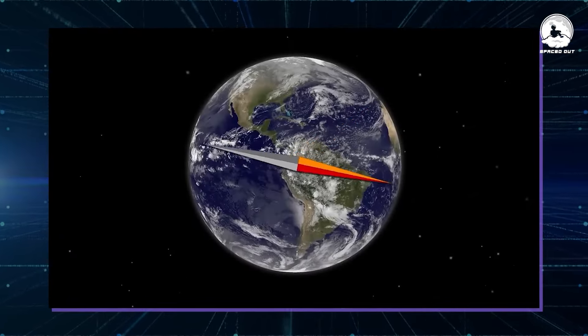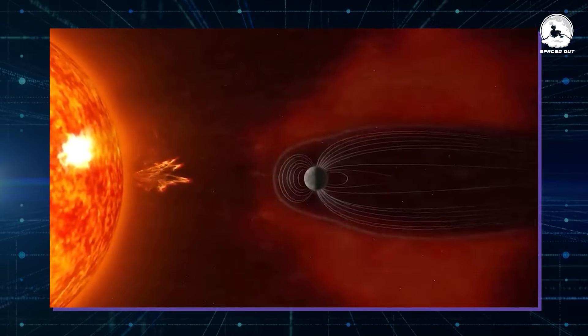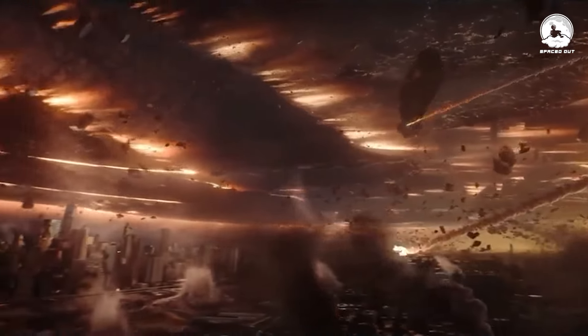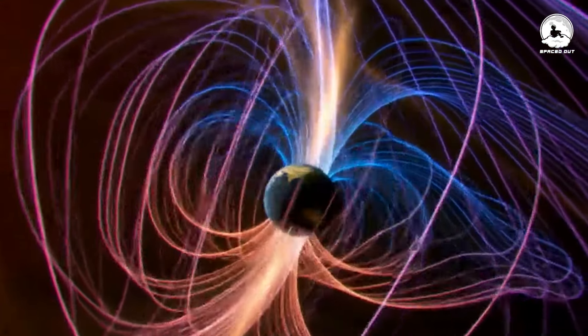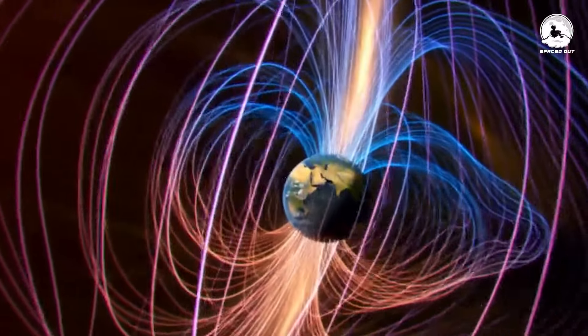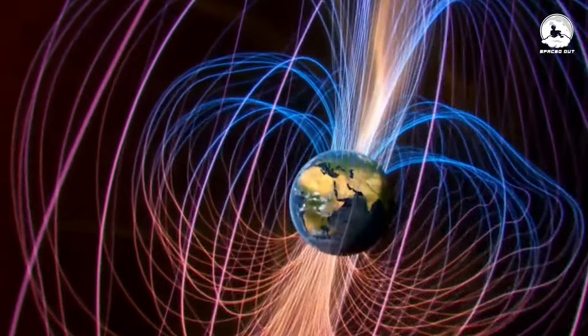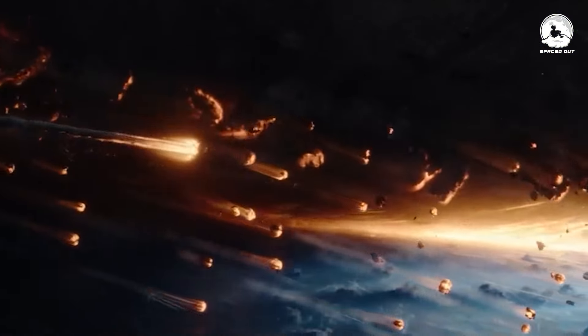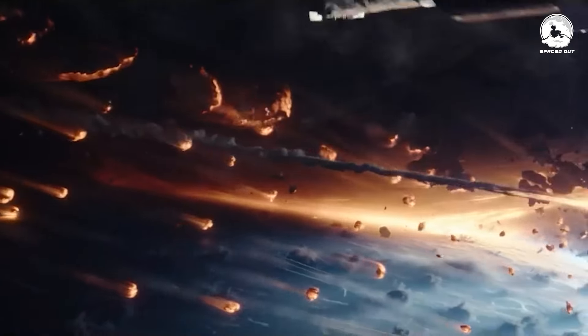Contrary to dramatic portrayals, a geomagnetic reversal is not an apocalyptic event. Throughout Earth's history, reversals have occurred without catastrophic consequences. While a reversal involves a significant weakening and eventual flipping of the magnetic field, it does not make the Earth suddenly uninhabitable or trigger catastrophic disasters.